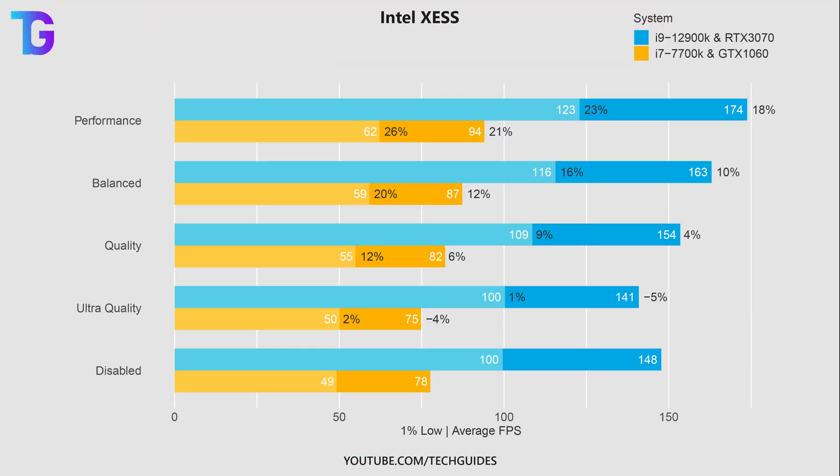On this graph you can see two measurements. The blue ones are for my primary system which has an i9-12000K, a 3070, and is running a 1440p display. The yellow numbers are for my secondary system that has an i7-7700K and a 1060, driving a 1080p monitor. You can see the absolute performance of the different filters in FPS as well as the relative change with respect to not running any filters at all.